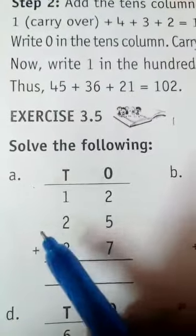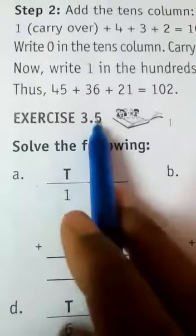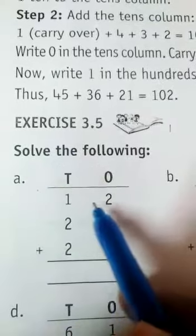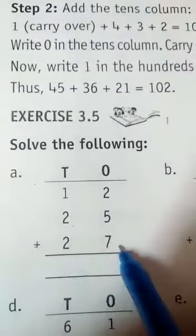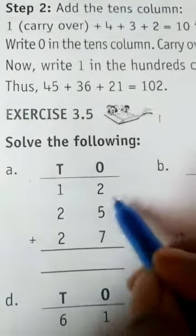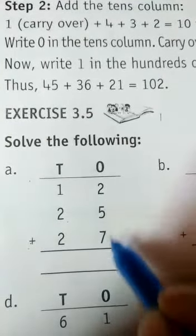I am going to solve another set of numbers in exercise 3.5. Here I have 12 plus 25 plus 27. In one space 2, 5 and 7. We are going to add this number.